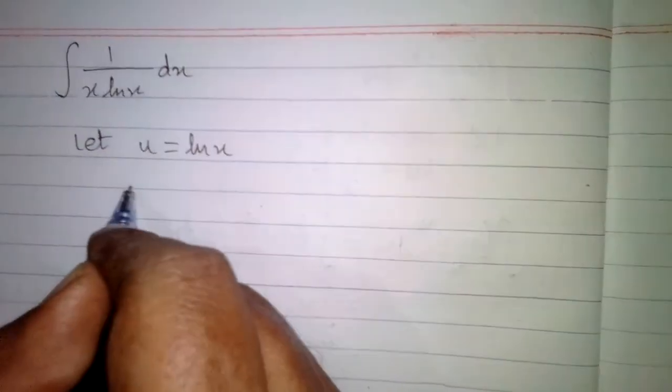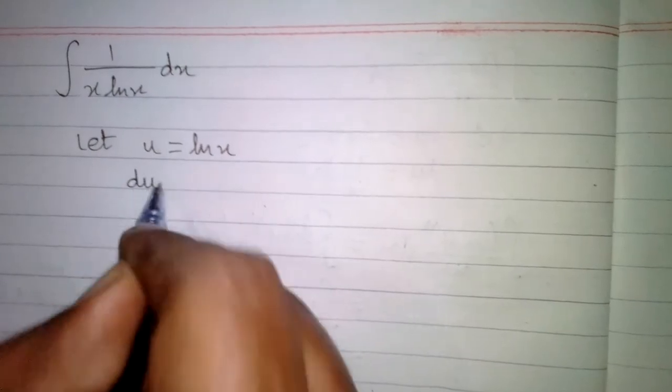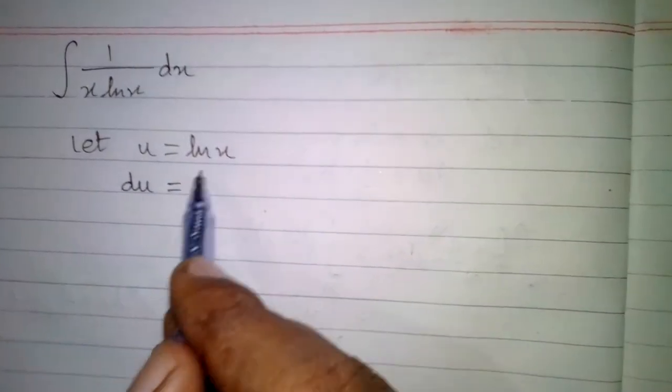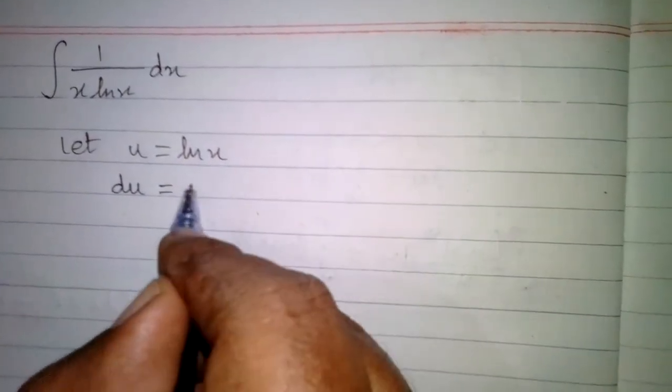In this video we will find the integral of 1 upon x ln x with respect to x. We can let u equal ln x, and the differential du is equal to the derivative of ln x,